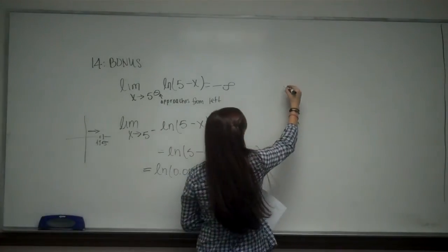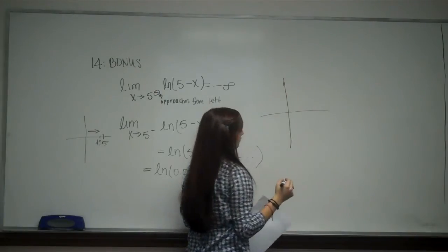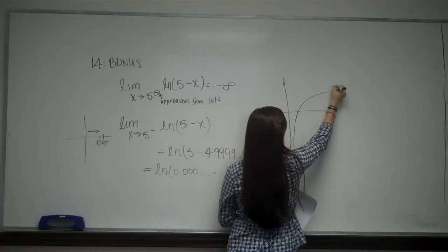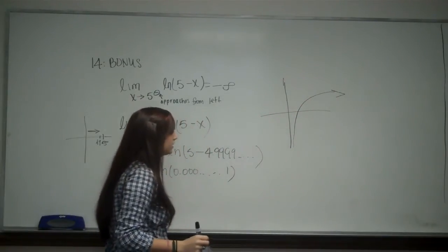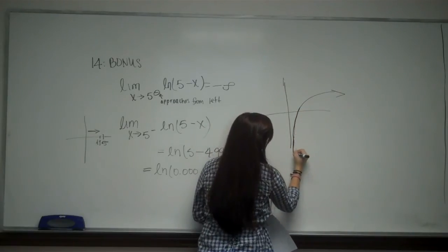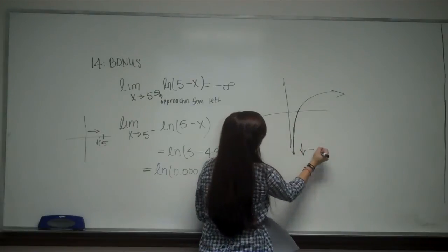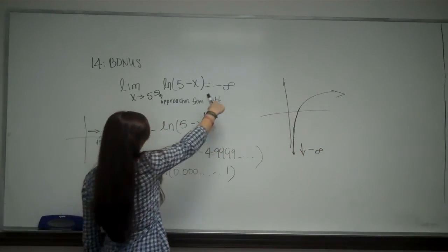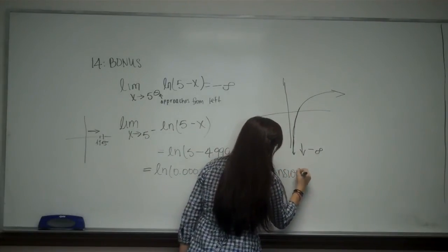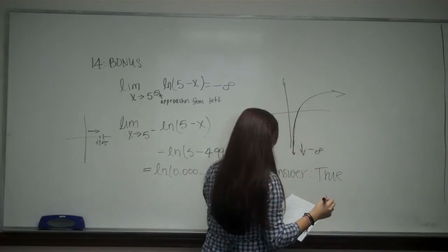And in order to figure out what that is, I'm going to look at the graph — because remember, we can't have the natural log of 0. The graph of the natural log of x looks like this, and as my graph gets closer and closer to 0, it's going down to negative infinity. And that is what they say the answer is. So the answer is true, which is choice A.